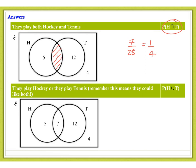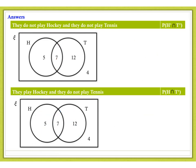The probability that they play hockey or they play tennis, which also means they could play both. So, that's everything in the union of hockey and tennis. So, that is 24 out of 28, which simplifies down to 6 sevenths. They do not play hockey and they do not play tennis. So, that simply refers to these four people. So, it's a probability of 4 twenty-eighths, 1 seventh.